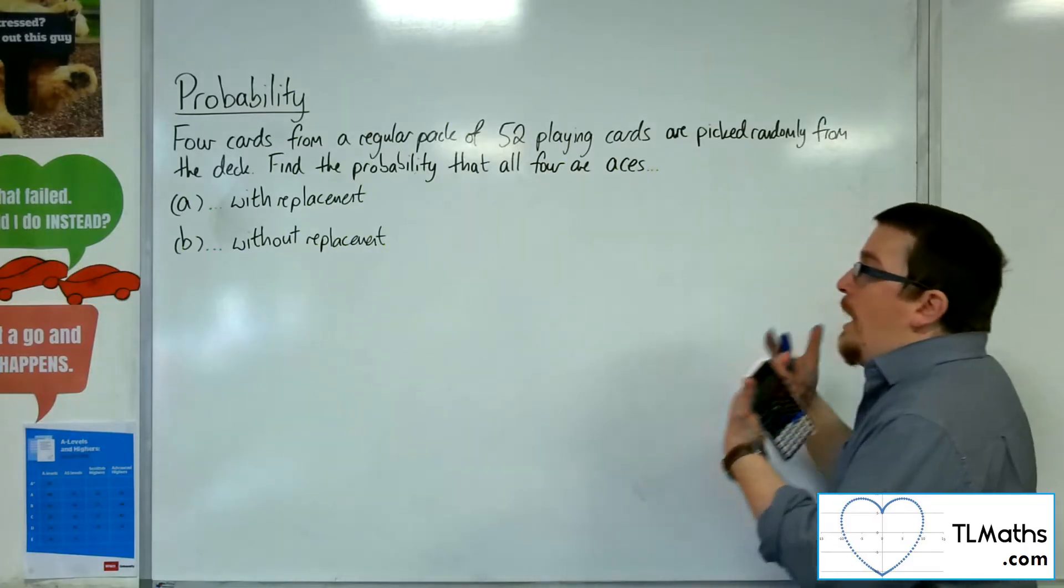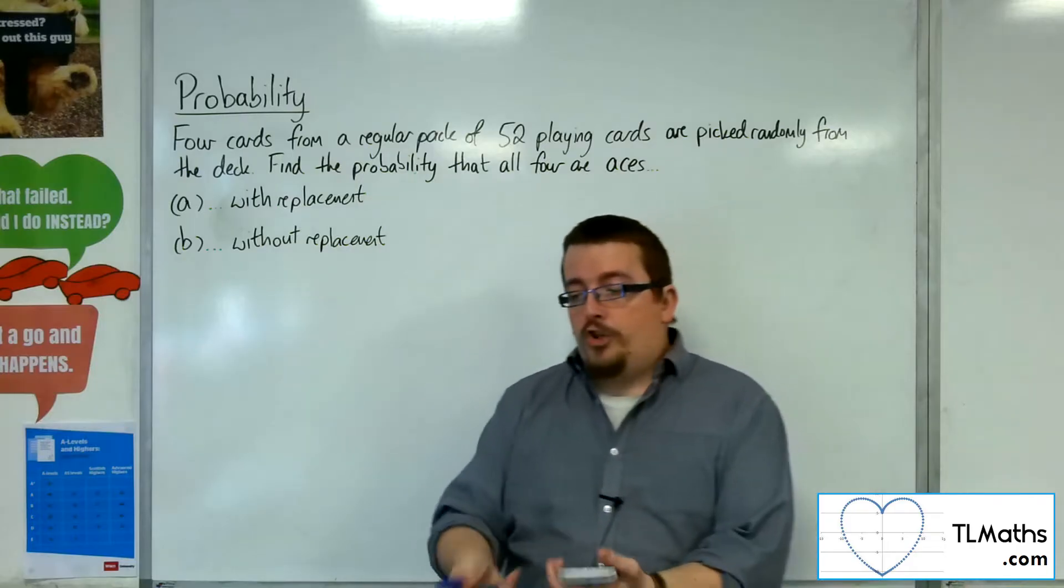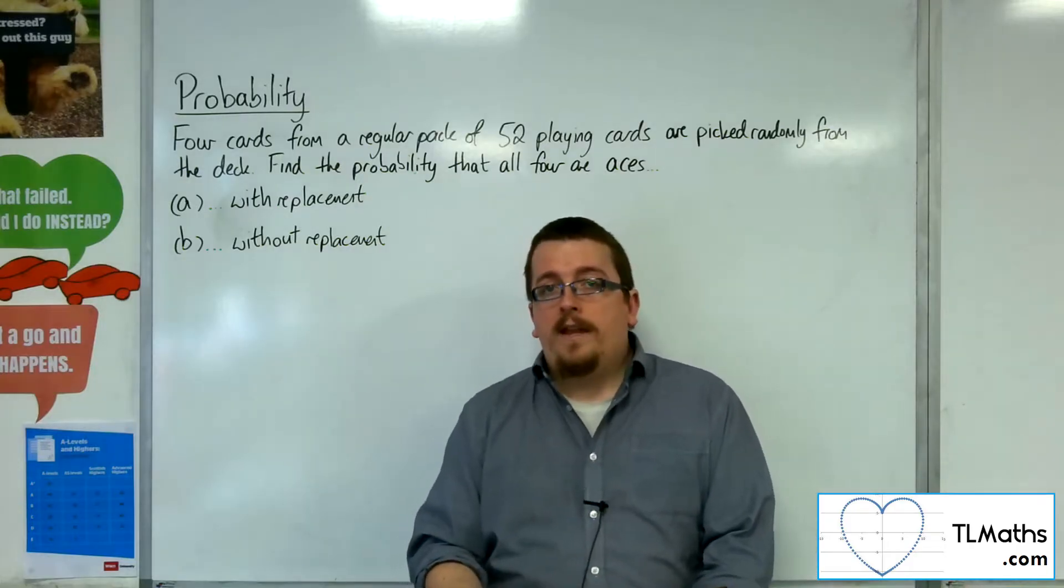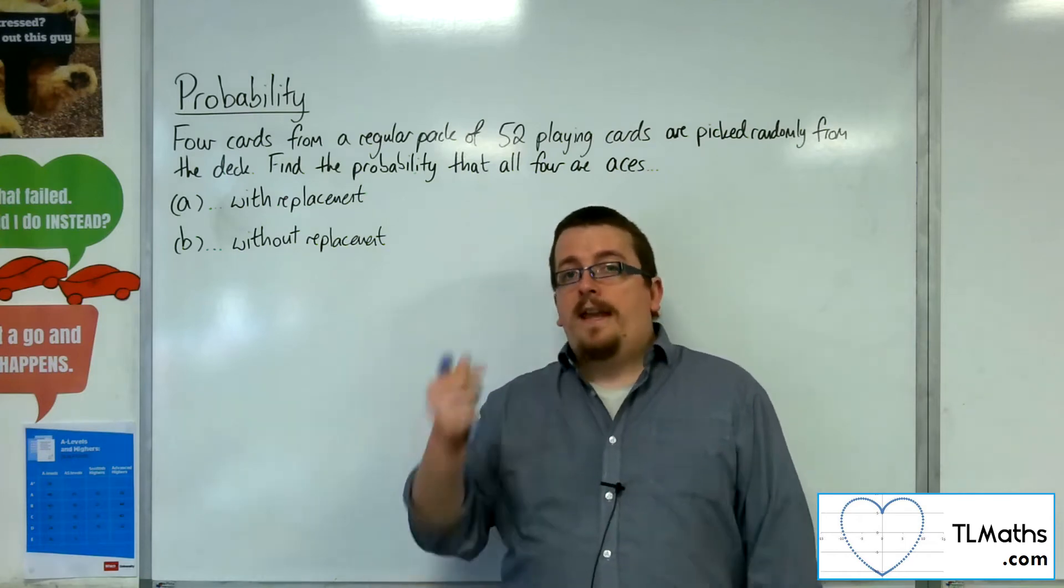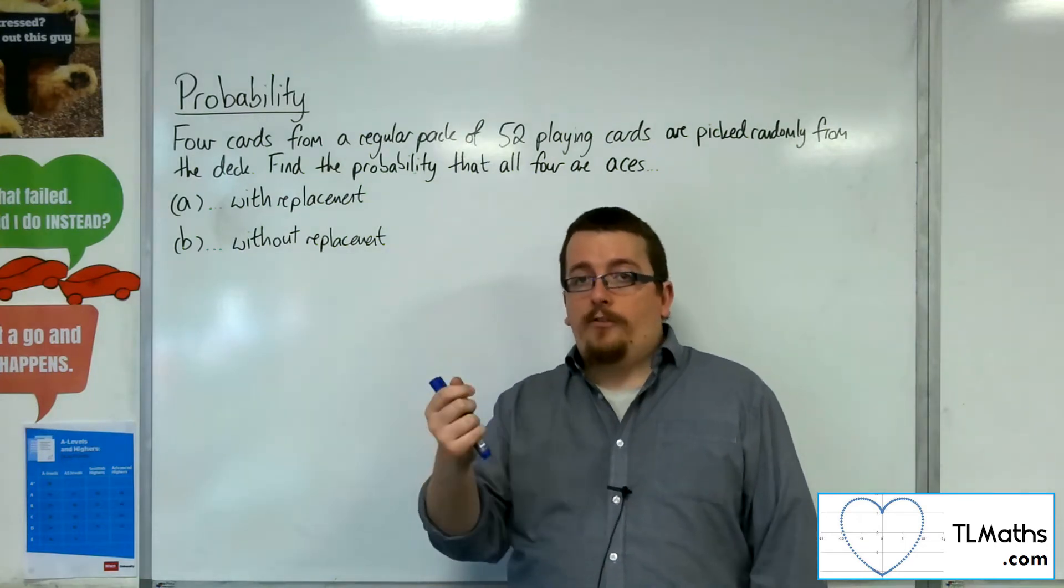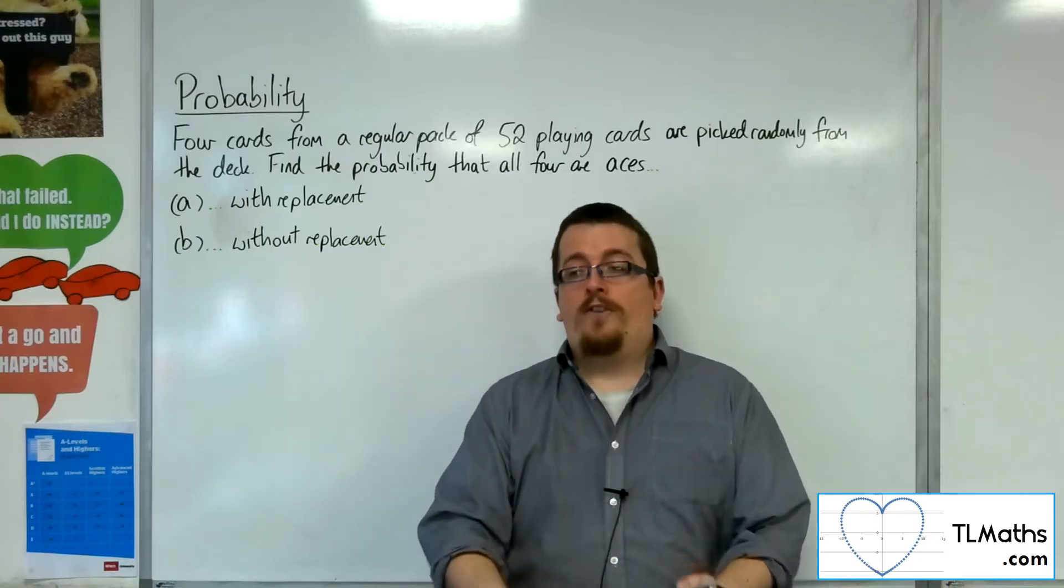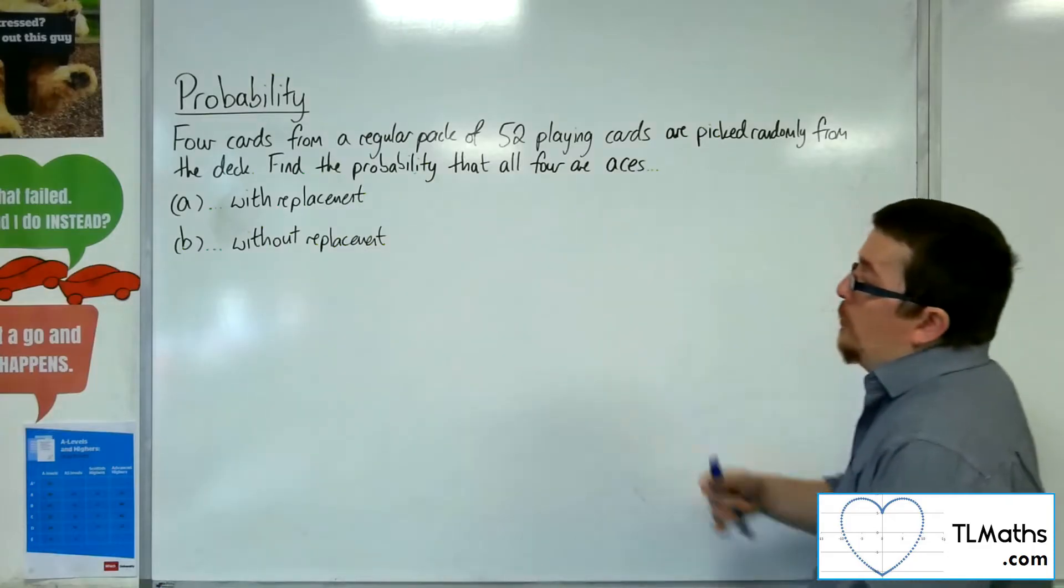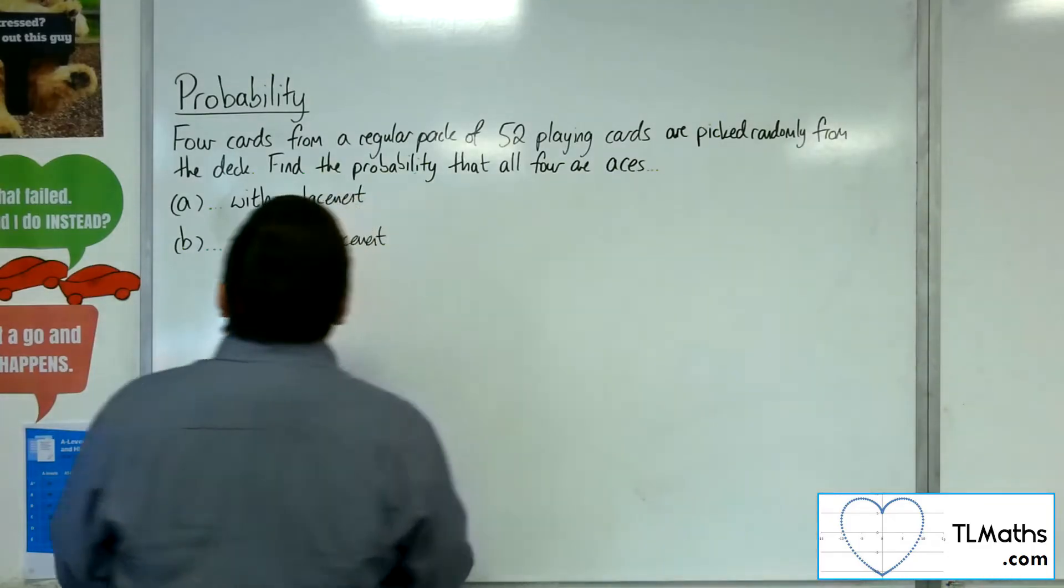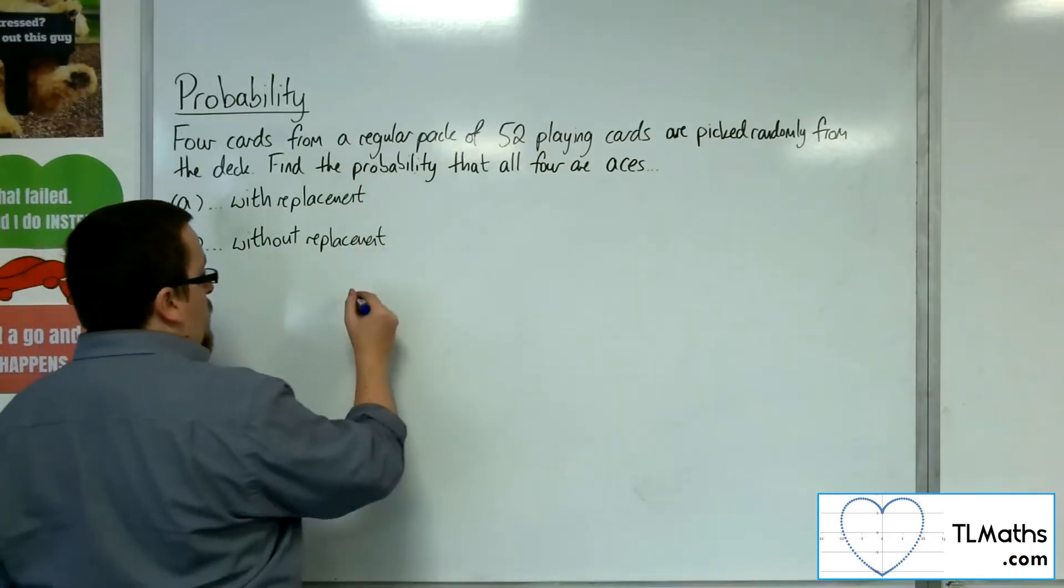So if we are replacing the card each time, I've shuffled the deck, it's in a random order, I pick out a card, is it an ace, yes or no, doesn't matter, then I put it back into the deck, shuffle it again, and then I'm going to pick out the second card. So the probability of picking out the first ace will be 4 out of the 52.